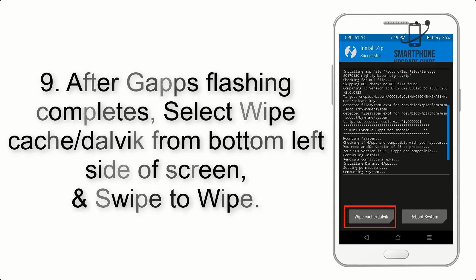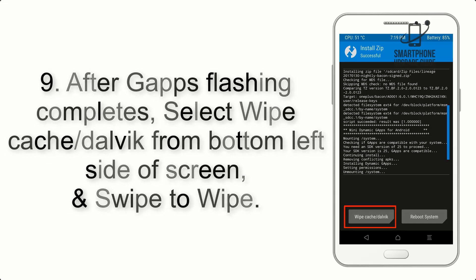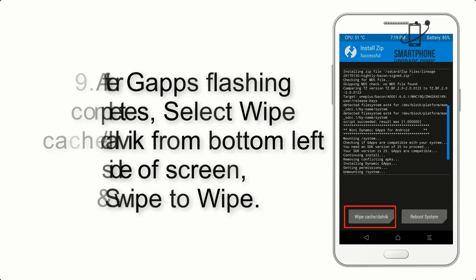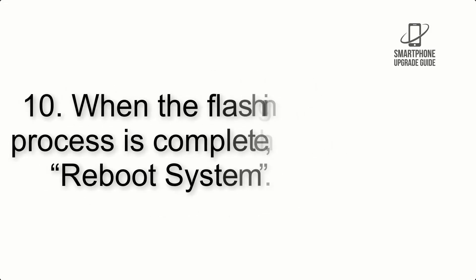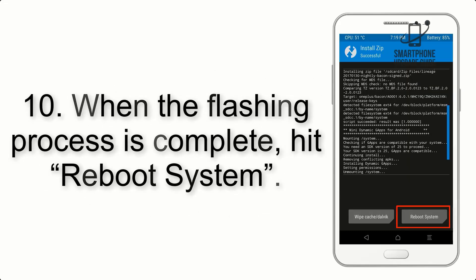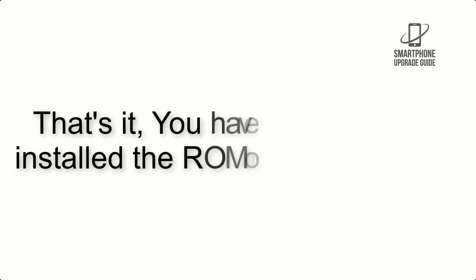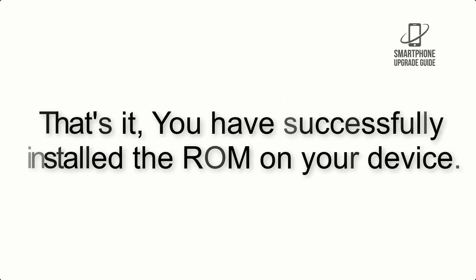Flash the GApps zip package in the same manner. After GApps flashing completes, select Wipe Cache and Dalvik from the bottom left side of the screen and swipe to wipe. When the flashing process is complete, hit Reboot System. You have successfully installed the ROM on your device.